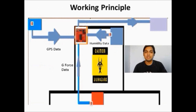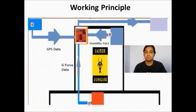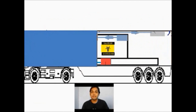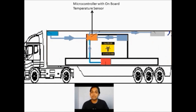We can see the GPS along with the accelerometer, the humidity sensor, and the on-chip temperature sensor continuously sending their data to the MCU. This entire setup is mounted on a vehicle carrying extremely sensitive cargo.